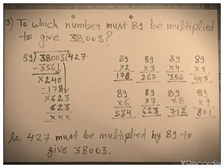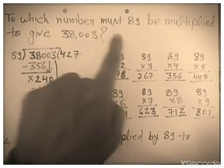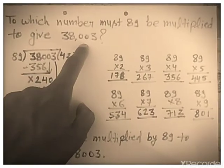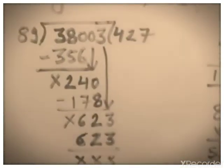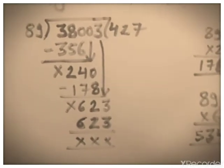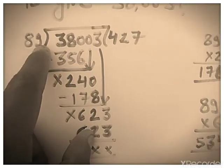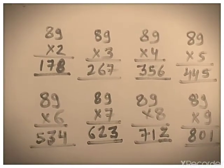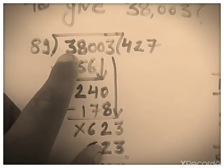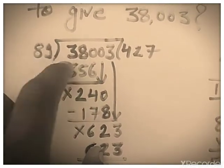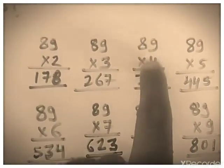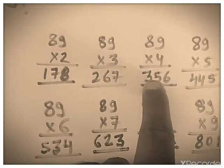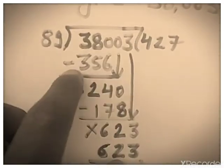Third example: by which number must 89 be multiplied to give 38,003? When we divide 38,003 by 89, first multiply 89 in rough. Then 38 is less than 89, so I will take three digits — 380. See: 89 × 4 is 356 and 89 × 5 is 445; 445 is greater than 380, so I take 89 × 4 = 356.